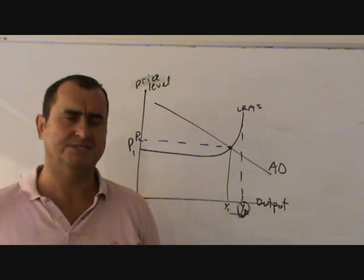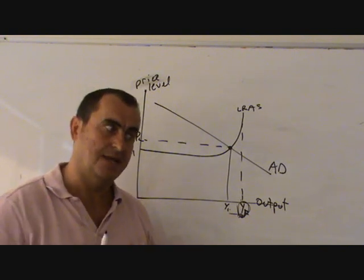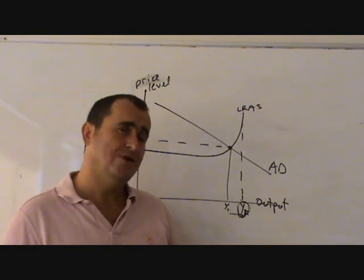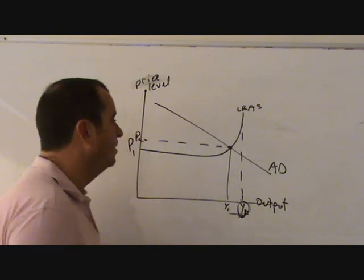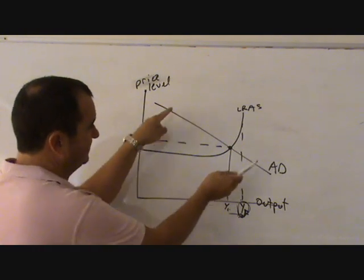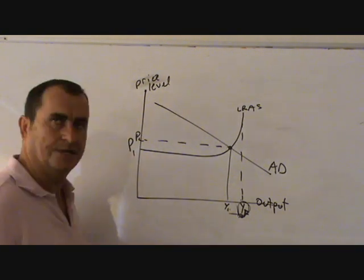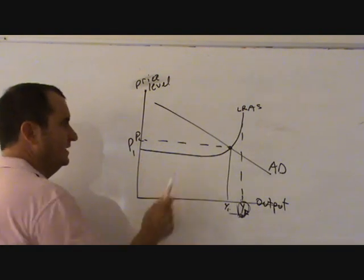So fiscal policy is a policy where the government has the ability, goes ahead and manipulates its level of government spending or its level of taxation with the intention of manipulating the position of the aggregate demand curve. Now imagine that a government is looking at its economy and it believes this is a true picture of its economy and it is here.